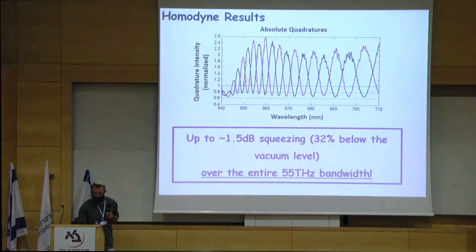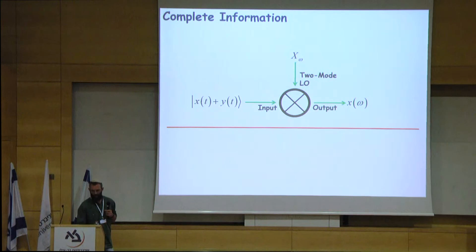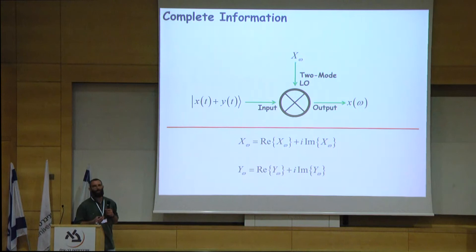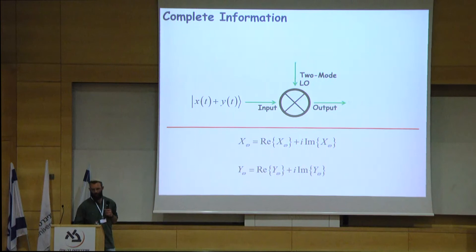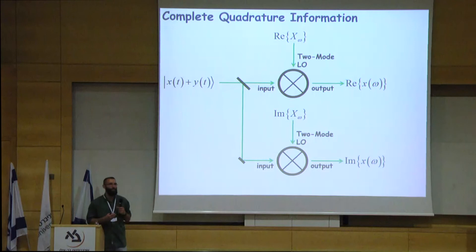I want to take a step back. Obtaining the two-mode quadrature information using the standard homodyne technique would be impossible. The reason is that each two-mode quadrature is a combination of two parts: a real part and an imaginary part. This simply means that the beat envelope is defined not only by the envelope amplitude, but also by the envelope phase. So when we tune the phases of the two local oscillators, we need to choose whether we want to measure the real part or the imaginary part of the envelope. What we would like is to divide the input into two parts to simultaneously measure both — however, this is impossible because we cannot produce two identical copies of the original quantum state.